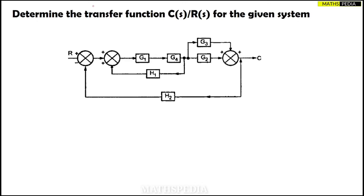In this video we'll be solving problems based on the transfer function using the block reduction method — how to find the transfer function equal to C(s)/R(s). C(s) is the output and R(s) is the input, so we have to find the ratio of both. First, we have to reduce the entire block in the middle, then only we can find C(s)/R(s).